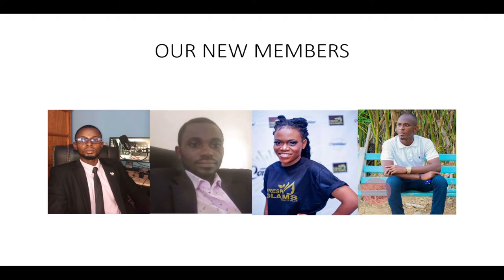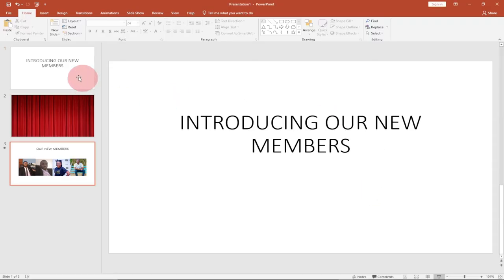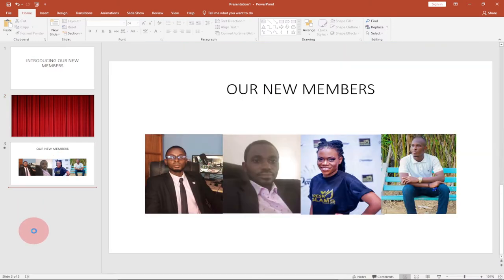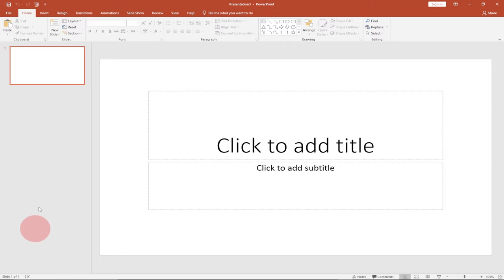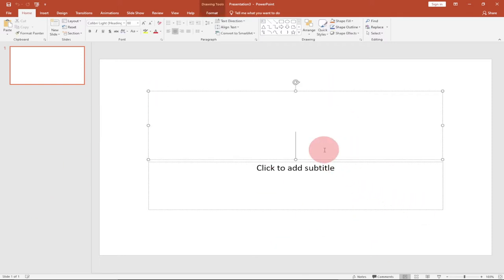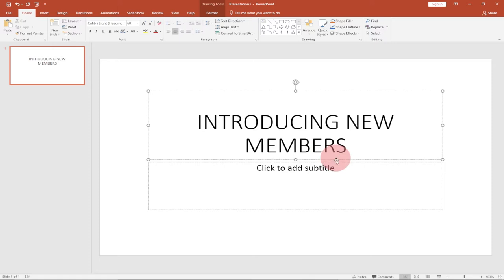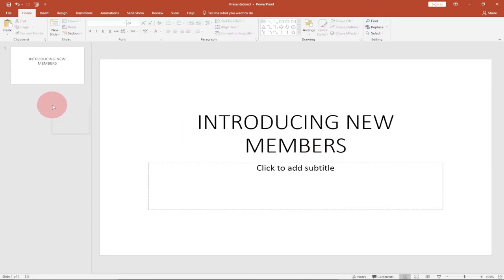Watch this video to the end to learn every step. This is basically just three slides. I'm going to open a new blank presentation and type the title on the first slide. Let's say this is the title of our presentation, and on the next slide we're going to add our members.